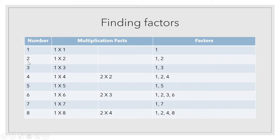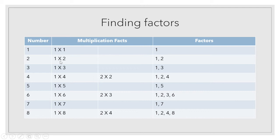The next number is two. It comes in two tables: the table of one and the table of two. One two is two and two ones are two. So there are two factors of two — one and two — because two comes as an answer in exactly two tables.